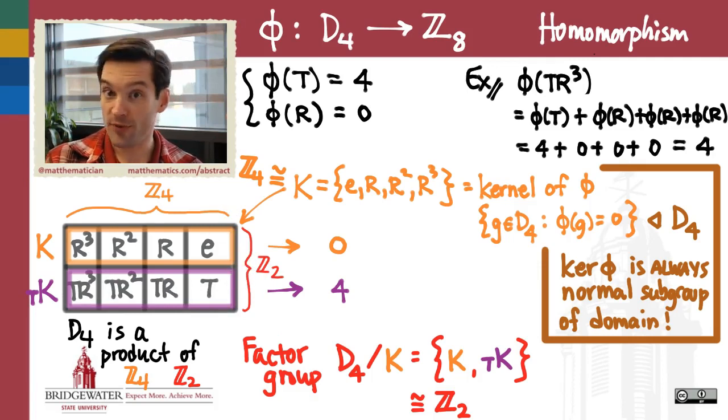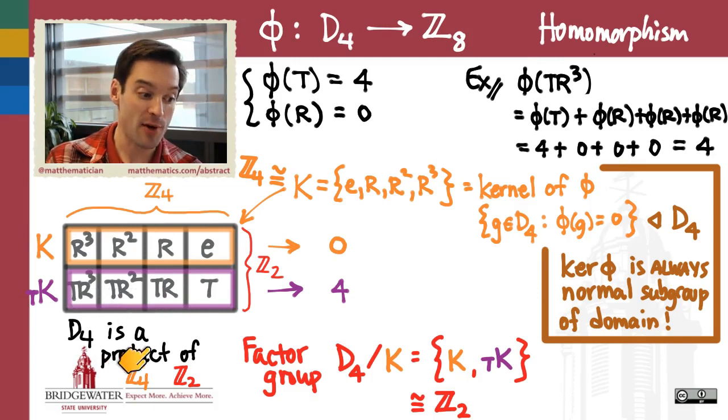Now, ℤ₄ and ℤ₂ are both cyclic groups and therefore abelian. So we know for sure that D₄ is not the direct product of those two groups. If it were the direct product, it would have to be abelian, because ℤ₄ and ℤ₂ are abelian. Since D₄ is not an abelian group, we know it can't be on the nose a direct product. But yet the elements of D₄ can still be written in unique ways as a product of some number of rotations with possibly one or zero reflections, t.